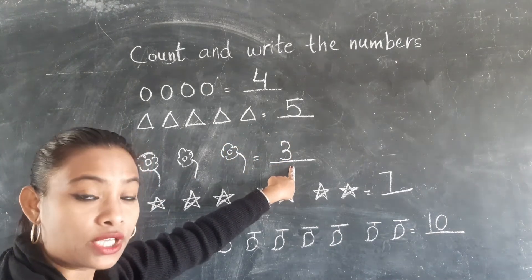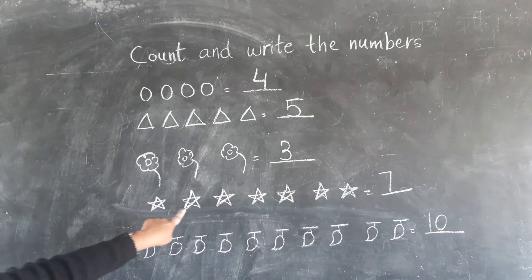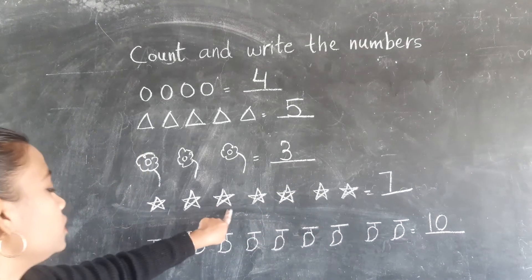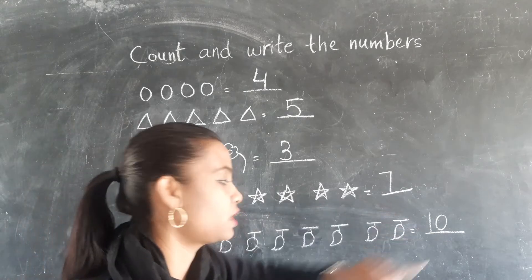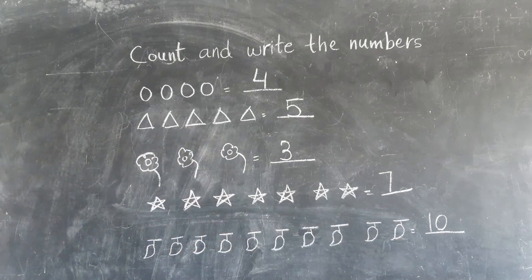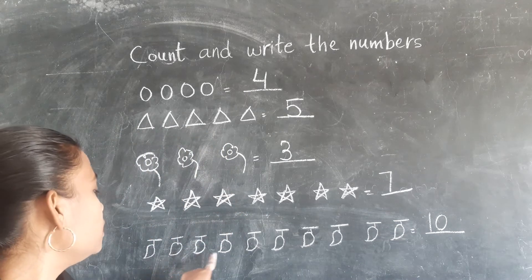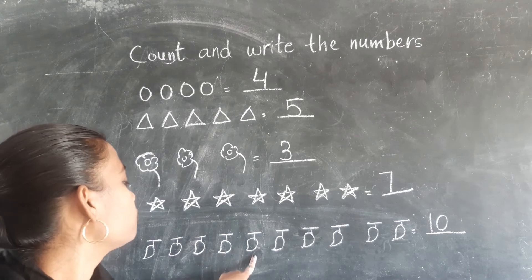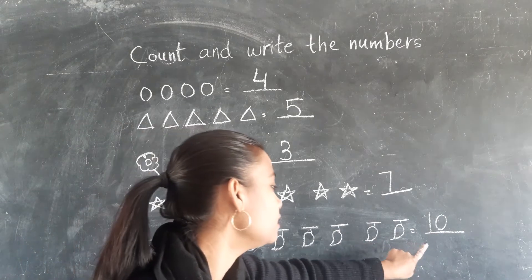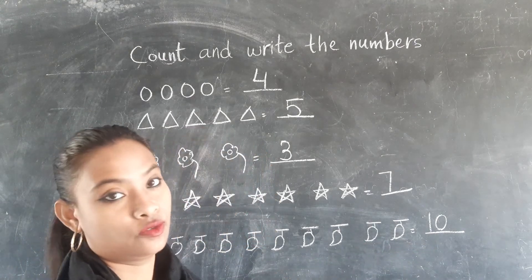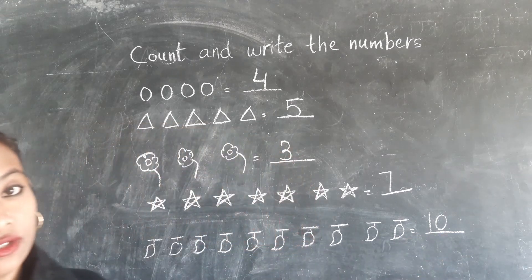You have to count and then you have to write. 1, 2, 3, 4, 5, 6, 7. So write here, 7. Now next. 1, 2, 3, 4, 5, 6, 7, 8, 9 and 10. So write here, 1, 0, 10. Alright?